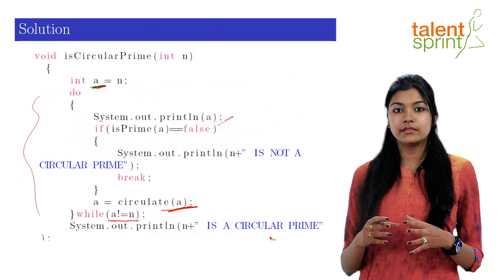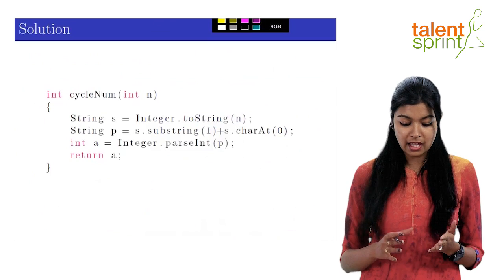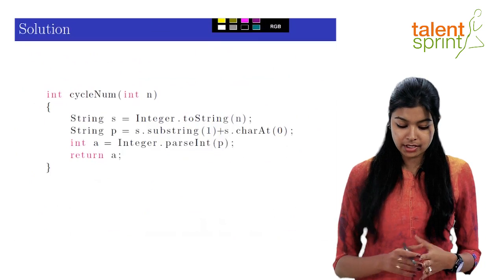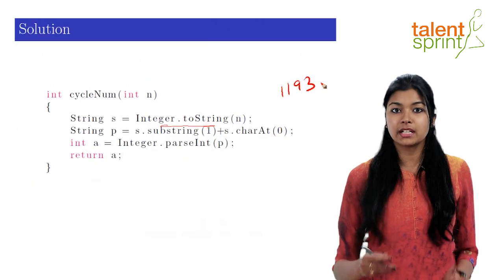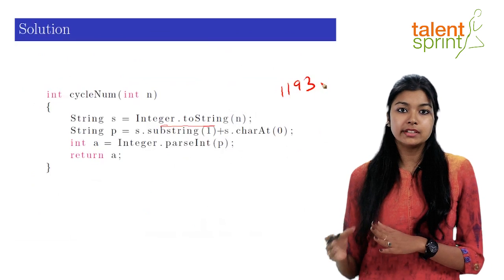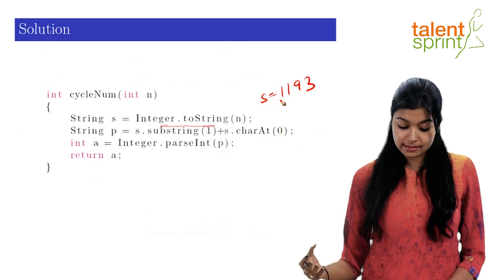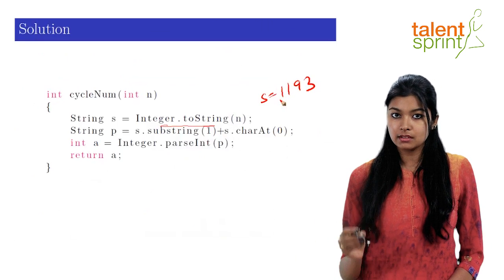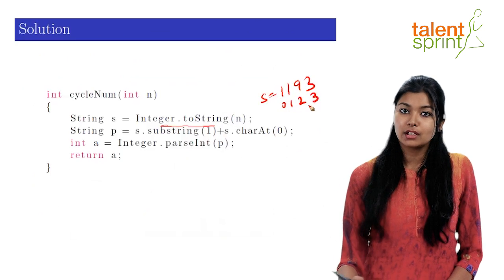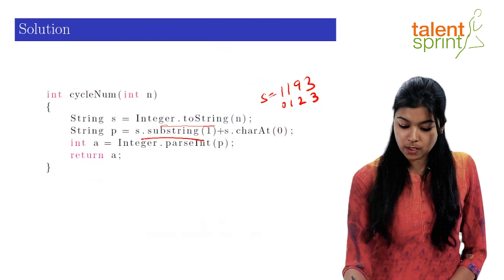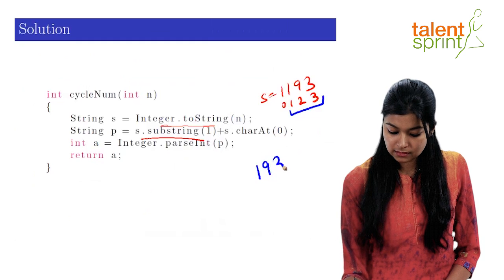Now, let me also show you how we have done the circulate function using strings in a very interesting way. So in this function, we have converted our number to a string using Integer.toString here. So let's say our number was 1193. I'm taking the same example that we just saw. We have converted this to string and stored it in the variable s. Now, in the next step, what we are doing is we are taking the substring at the index 1. So the index of the string would be 0, 1, 2, 3. So what the substring at index 1 will give us is 193.